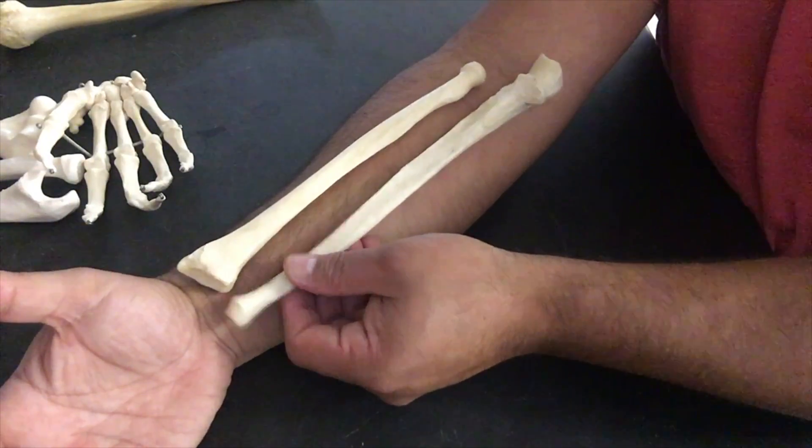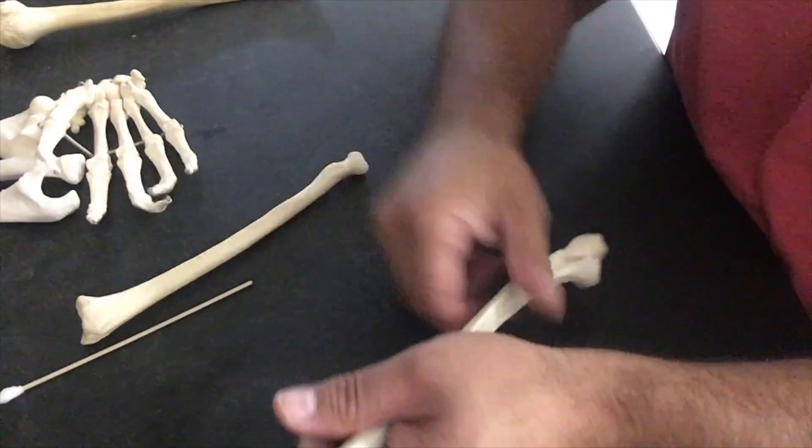I see that the ulnar notch is facing my ulna, so let's go ahead and grab the ulna. Yes, it sits there. It's facing the correct way, so this is a right radius.